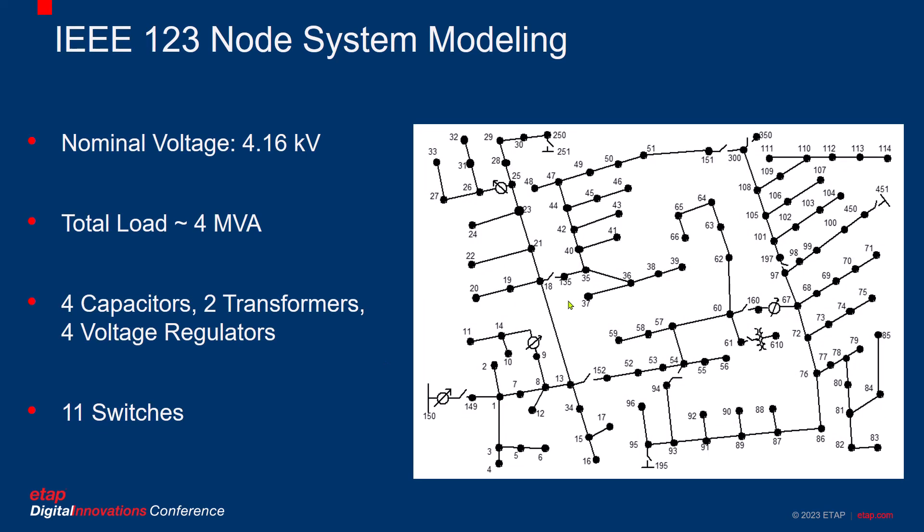The IEEE 123 node test distribution system is the basis of our modeling and analysis today. It is a 4.16 kV radial distribution network with many three-phase and one-phase branches and loads. The total rated load connected is almost 4 MVA. This system is known for its voltage problems that are addressed through four voltage regulators and four shunt capacitors. There are also two transformers in the system. The system has 11 SPST switches that also make it suitable for reconfiguration and fault management studies.